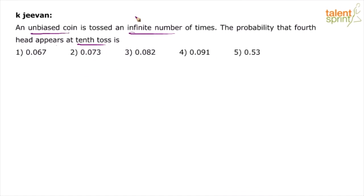We are only looking at what happens at the 10th toss — we are trying to get a desired result at the 10th toss. What happens after the 10th toss is not our concern. So from the 11th toss onwards we don't have to worry. This 'infinite' is only to confuse us. In this case, infinite is effectively equal to 10, because we are looking at the 10th toss.